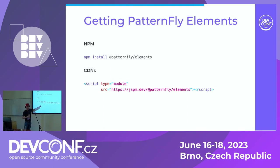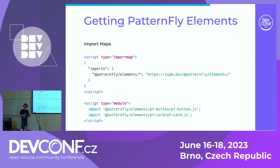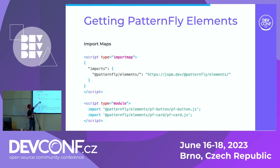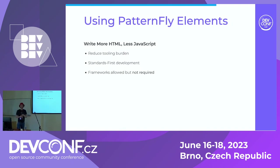The browser will deduplicate all of these module references, so if you have isolated components in your CMS, you can do this 100 times with no performance penalty. This pairs extremely well with a relatively new browser standard — import maps — which just landed in all three major engines. Import maps let you use bare module specifiers instead of importing from a URL, and up in the head of your document you can map that specifier to your CDN. Our goal for you is that you should be able to write more HTML and less JavaScript, reduce your tooling burden, practice standards-first development for knowledge transfer and future-proofing. Frameworks are allowed but not required — anywhere that HTML works, our components work.